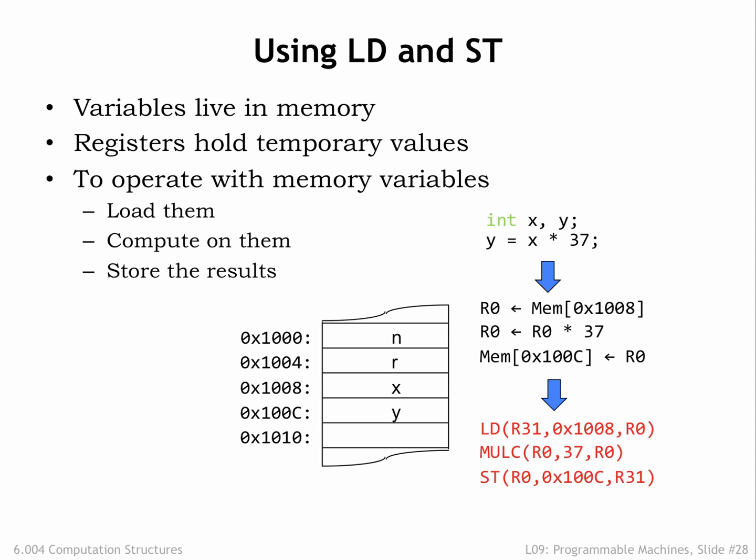The address calculation performed by load and store works well when the locations we need to access have addresses that fit into the 16-bit constant field. What happens when we need to access locations at addresses higher than 0x7FFF? Then we need to treat those addresses as we would any large constant, and store those large addresses in main memory so they can be loaded into a register to be used by load and store.